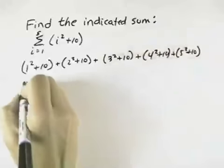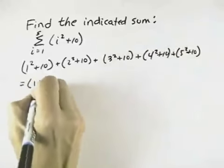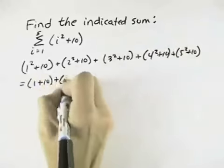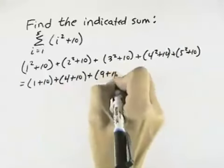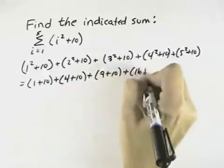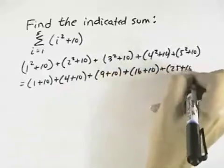So the indicated sum would be 1 plus 10, plus 2 squared is 4 plus 10, plus 3 squared is 9 plus 10, 4 squared is 16 plus 10, and 5 squared is 25 plus 10.